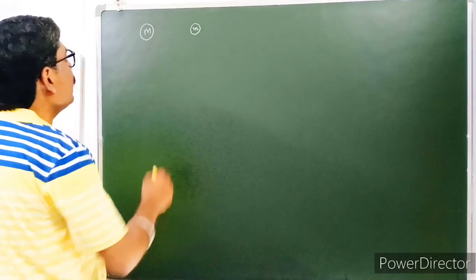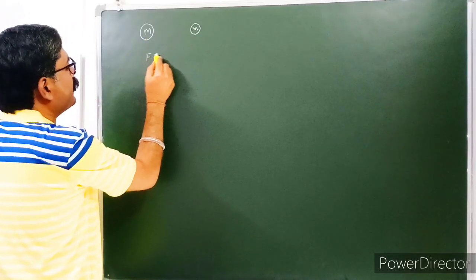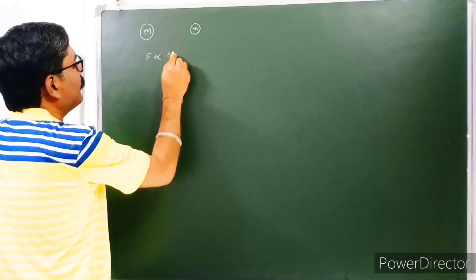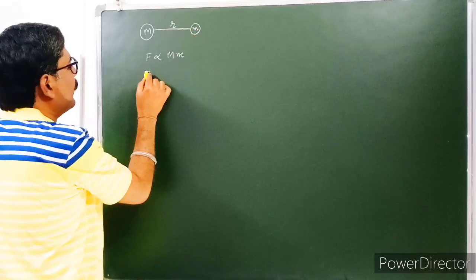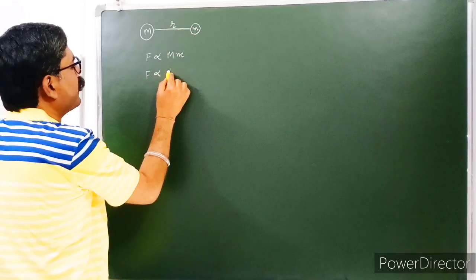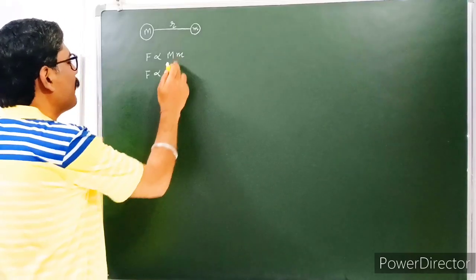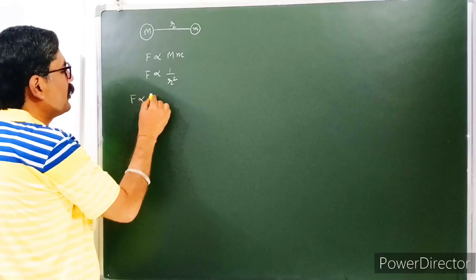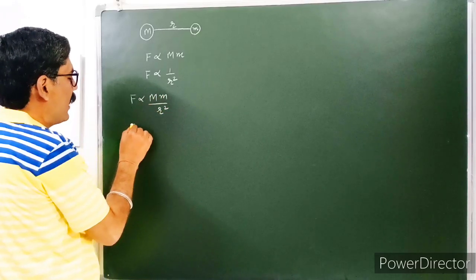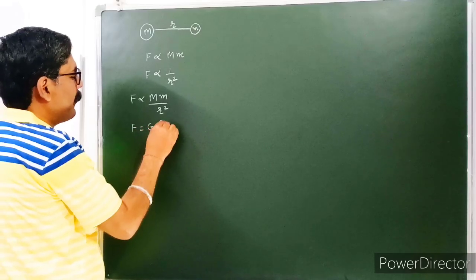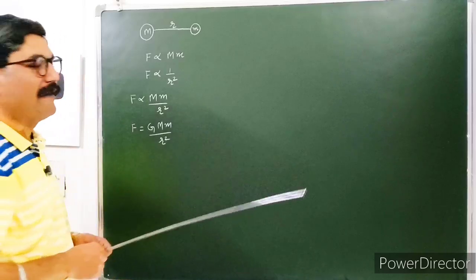According to Newton's law of gravitation, the attractive force between these two bodies will be directly proportional to the product of these two masses. And if the distance between these two bodies is R, then that attractive force will be inversely proportional to the square of the distance between these two bodies. Combining these two, you get F ∝ Mm/R², and on removing the proportionality sign, you get a constant G, known as the universal gravitational constant.